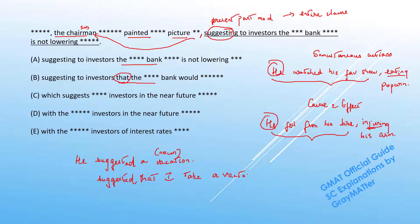Whereas on the other hand if I say "he suggested that" I will not end with "he suggested that a vacation." I have to say "he suggested that I take a vacation." So in this case this is not simply a noun, it is a clause construction. This "suggesting to investors" would just apply to the central bank and this does not make any sense. He's not suggesting the central bank; he's suggesting to investors that the central bank would do something.